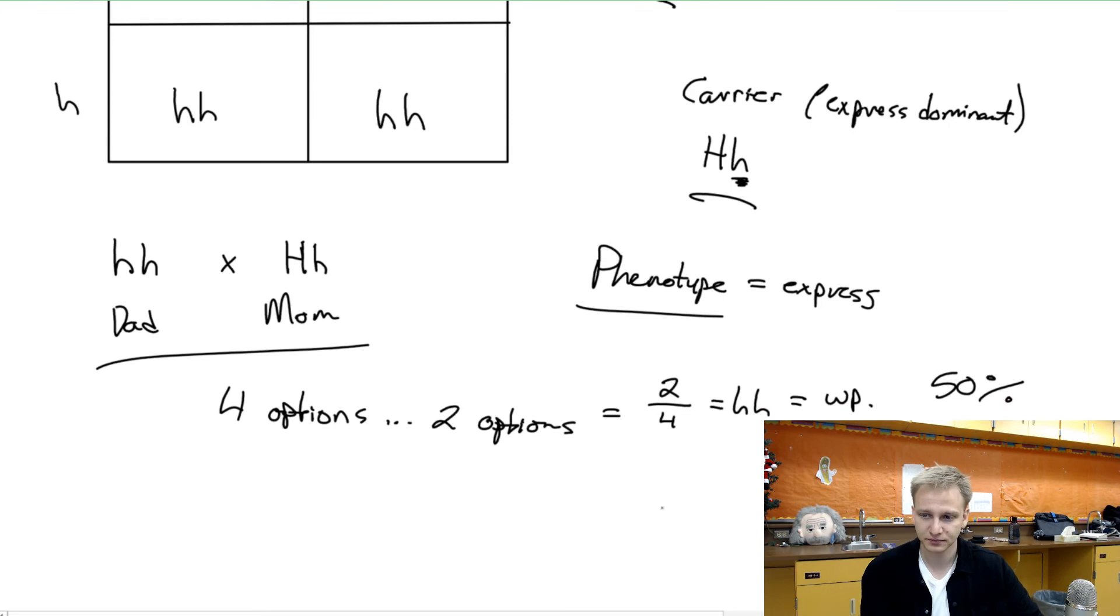What we can also see then is that two out of the four options were capital H lowercase h, and so that would be a flat hairline with a 50% chance of me getting that. What we could see then though is that I still would be a carrier of that widow's peak gene.